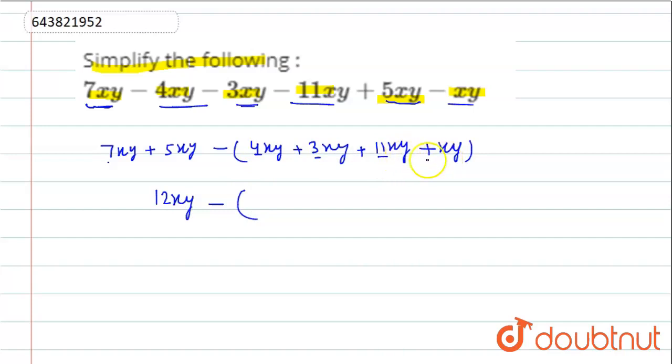7 plus 11 is 18. 18 plus 1 is 19xy. This can be written as 12xy minus 19xy. This will be equal to minus 7xy will remain.